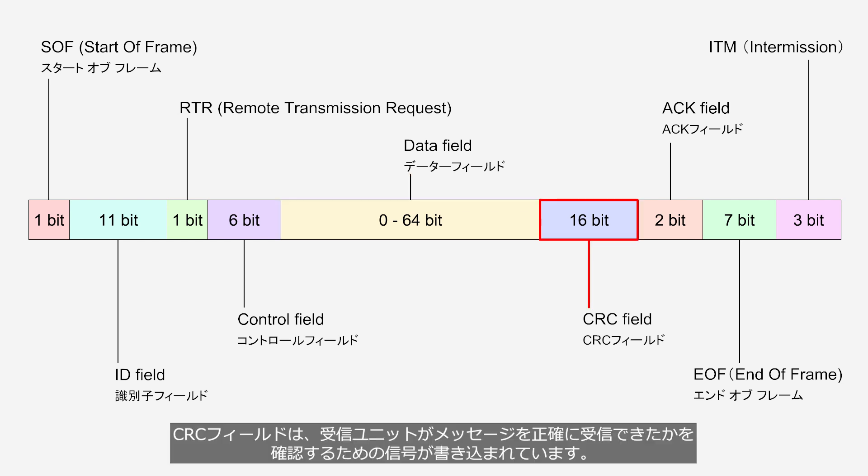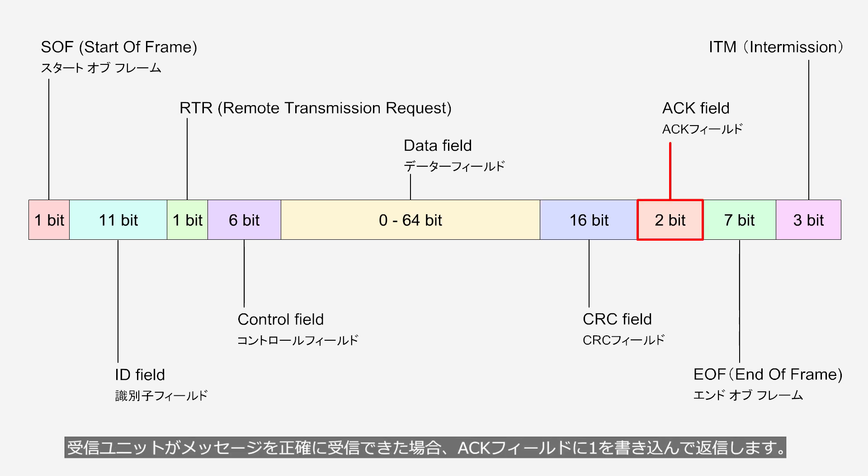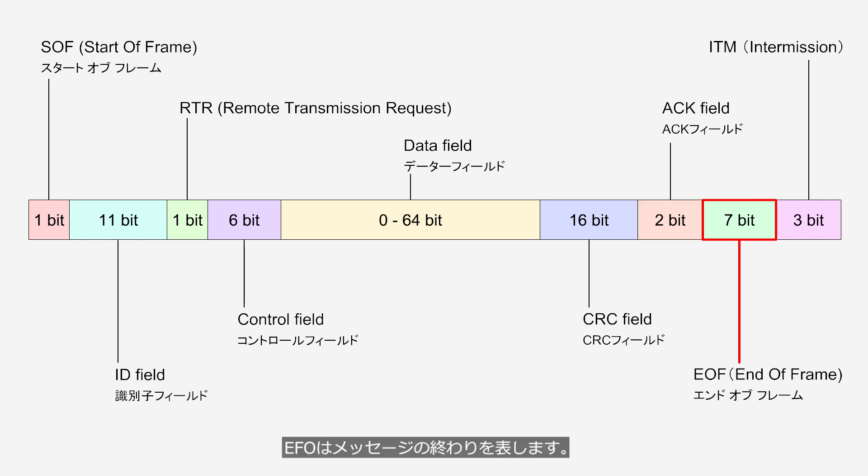The CRC field contains signals to confirm whether the receiving unit accurately received the message. When the receiving unit accurately receives the message, it writes data 1 in the ACK field and responds to the message. The EOF indicates the end of the message.